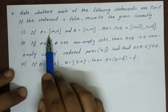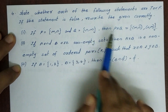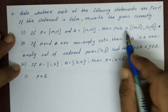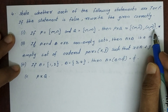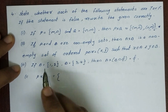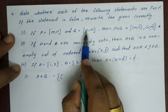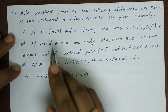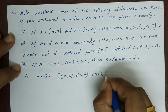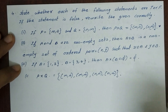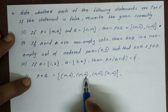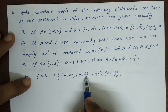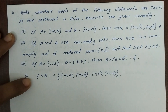First: if P = {m, n} and Q = {n, m}, then P×Q = {(m,n), (m,m), (n,n), (n,m)}. We check: P×Q pairs each element of P with each element of Q. The second element m in Q is the second element of some pairs.